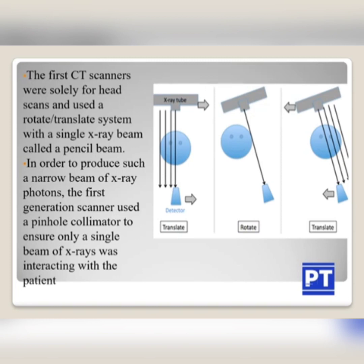You can see the X-ray tube as well as the detector — there was only one detector and you can see the linear movement in the figure. After one completion, the X-ray tube rotates. The first CT scanner used a rotate-translate system with a single pencil beam. In order to produce such a narrow beam, the first generation scanner used a pinhole collimator to ensure only a single beam of X-ray was interacting with the patient.